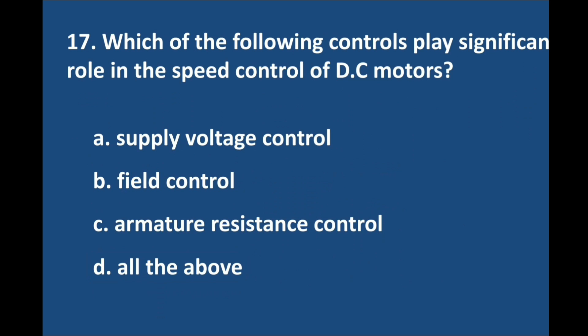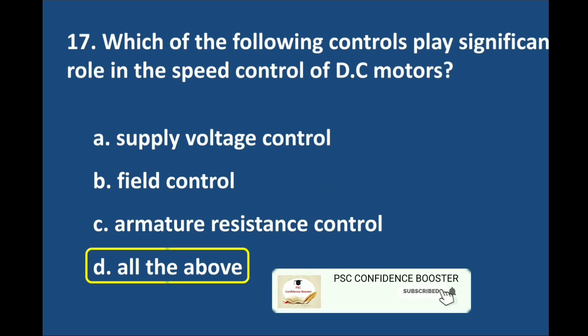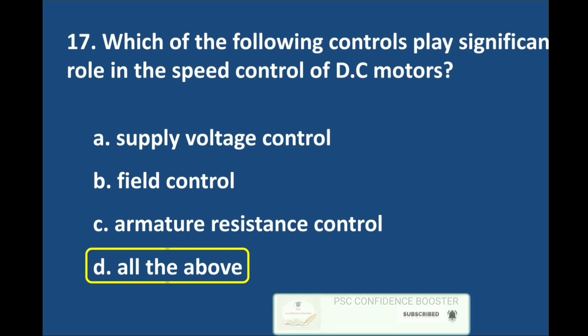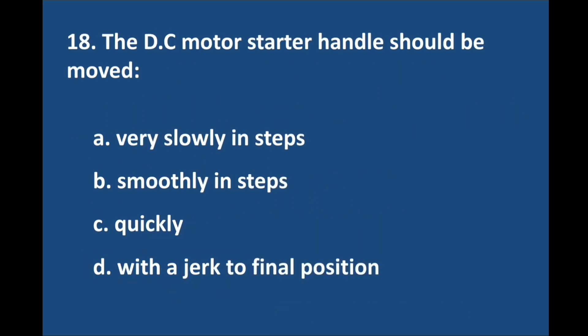Question number 17. Which of the following controls plays a significant role in the speed control of DC motors? Answer is option B: Smoothly in steps.